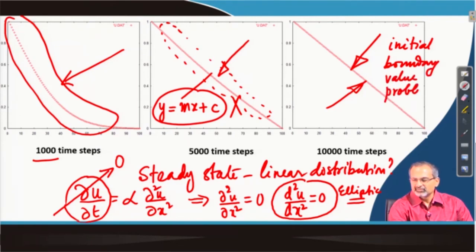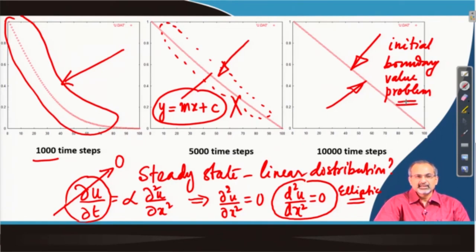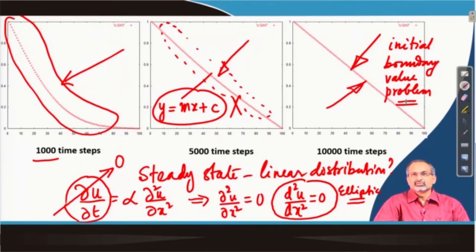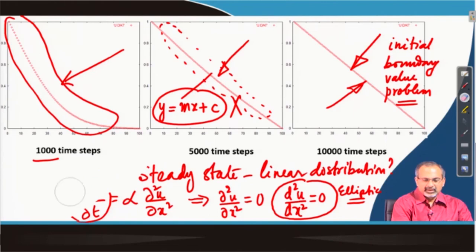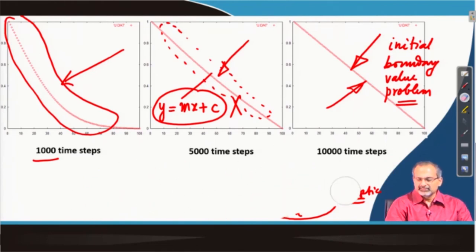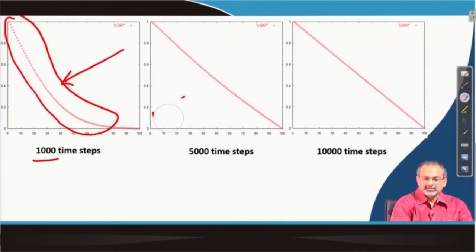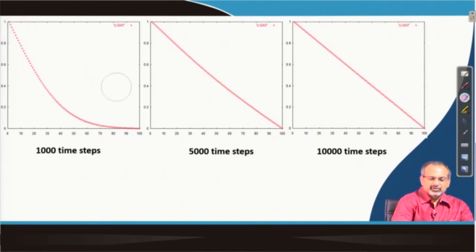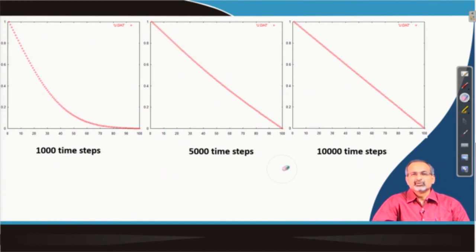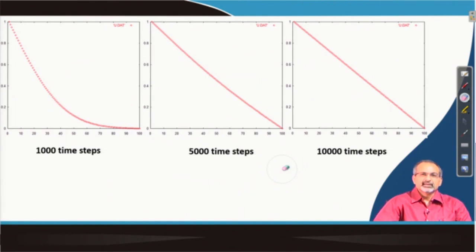We started from the initial condition at t=0, with boundary conditions specified, and time-stepped the solution over a large number of steps maintaining boundary conditions throughout until reaching a steady state. All through, the solution remained stable because we satisfied the von Neumann stability constraint that d must be kept less than or equal to 0.5, and we chose d = 0.5 precisely — and as expected, the solution remained stable.